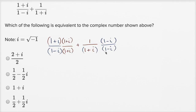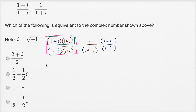Notice both denominators are now going to be the same thing — they're going to be (1+i)(1-i). Let's figure out what this is. For the first fraction's numerator, we're going to have: one times one is one, one times i is i, i times one is i, and i times i is negative one.